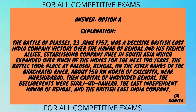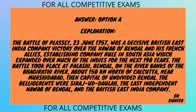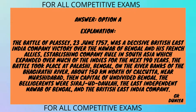Answer: Option A. Explanation: The Battle of Plassey, 23 June 1757, was a decisive British East India Company victory over the Nawab of Bengal and his French allies, establishing company rule in South Asia which expanded over much of the Indies for the next 190 years. The battle took place at Plassey, Bengal, on the riverbanks of the Bhagirathi River, about 150 km north of Calcutta.